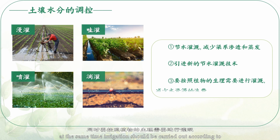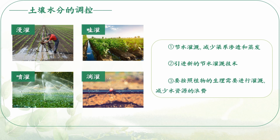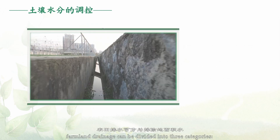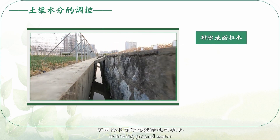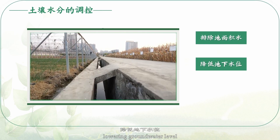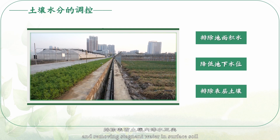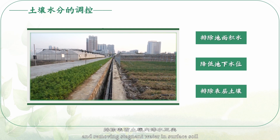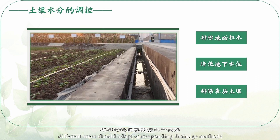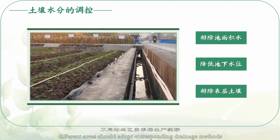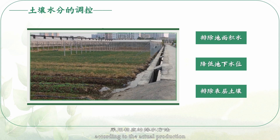Irrigation should be carried out according to the physiological needs of plants to reduce the waste of water resources. Farmland drainage can be divided into three categories: removing groundwater, lowering groundwater level, and removing stagnant water in surface soil. Different areas should adopt corresponding drainage methods according to actual production conditions.